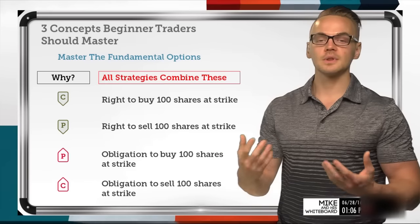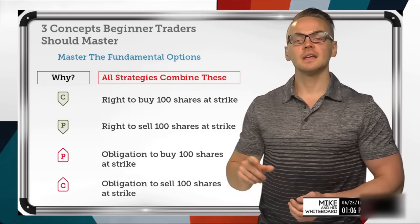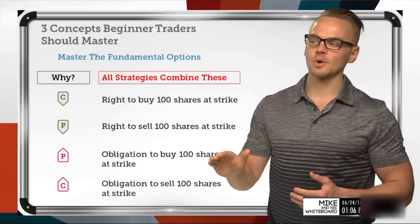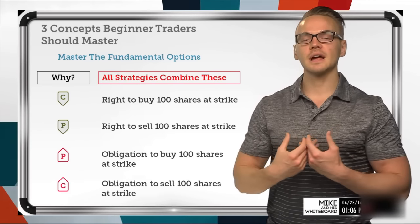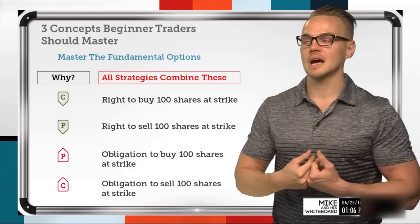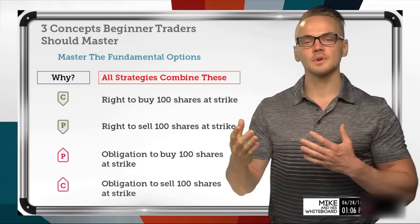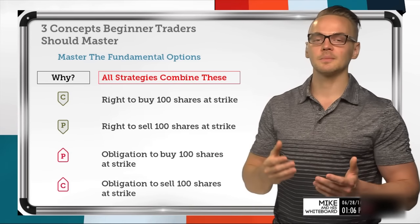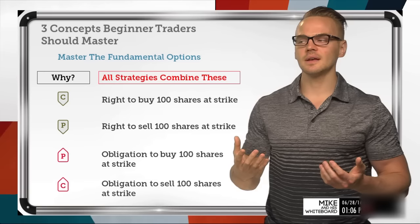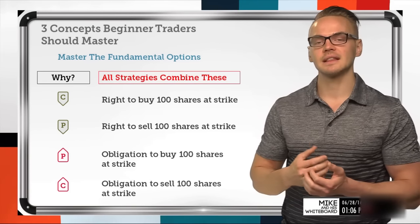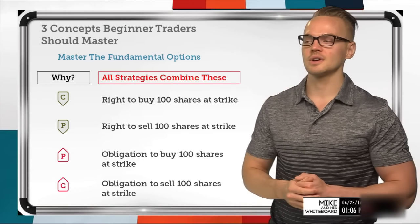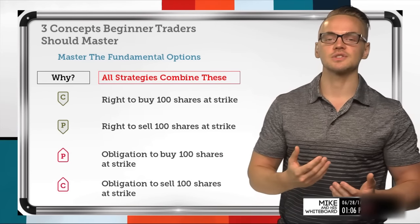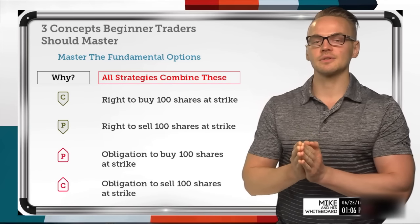A short put is the opposite of a long put — it presents me with the obligation to buy 100 shares at that strike if the long put owner exercises prior to expiration. When we're dealing with short options, that is where we have early assignment risk. We don't have the ability to exercise those options — the long option holders do. That early assignment risk really only comes into play when dealing with in-the-money options. A short call is the obligation to sell 100 shares at that strike.